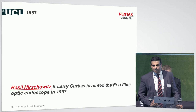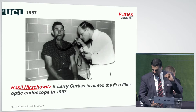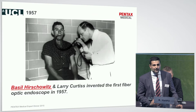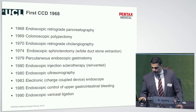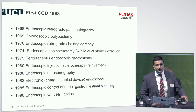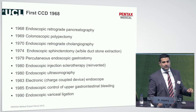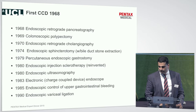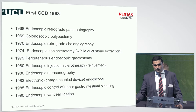The evolution of the fiber-optic endoscope has developed rapidly over the past 70 years, from the first fiber-optic gastroscope created by Larry Curtis and Basil Hersovitz back in 1957, and the first charge-couple device in 1968 really led to an explosion in endoscopic advancement — not just in imaging, but also as the imaging got better, we became more adventurous as advanced endoscopists, going from colonic polypectomy in 1969 to ERCP to the first variceal band ligation in 1990.